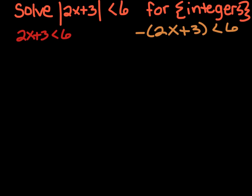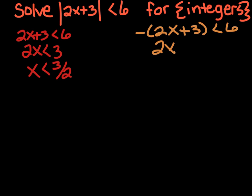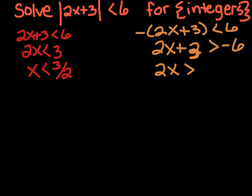Then we're going to solve each one. If I subtract 3, I get 2x is less than 3, and then divide by 2: x is less than 3 halves, which is 1.5. Over here, if I divide both sides by negative 1, I have 2x plus 3 — switch the sign — is greater than negative 6. Take away 3 from both sides: 2x is greater than negative 9, and divide by 2: x is greater than negative 9 halves.